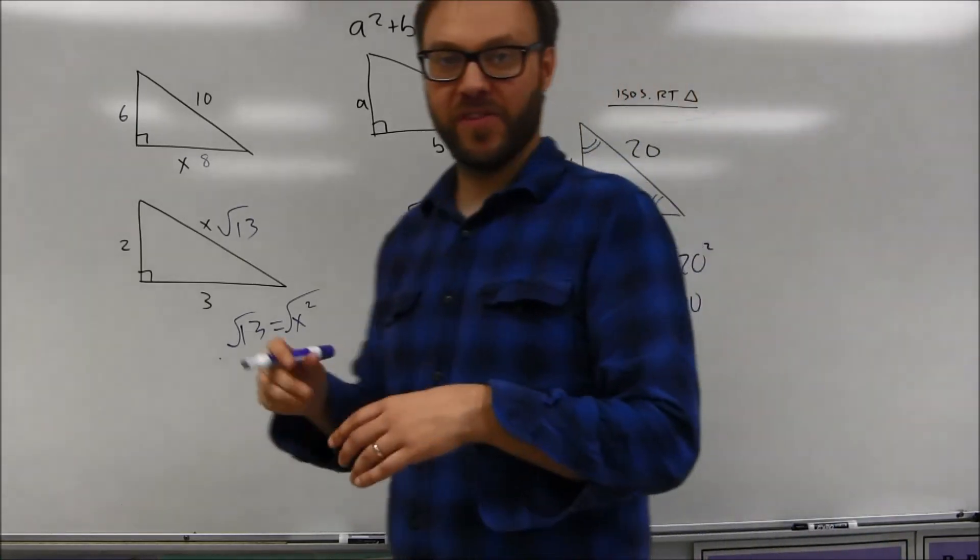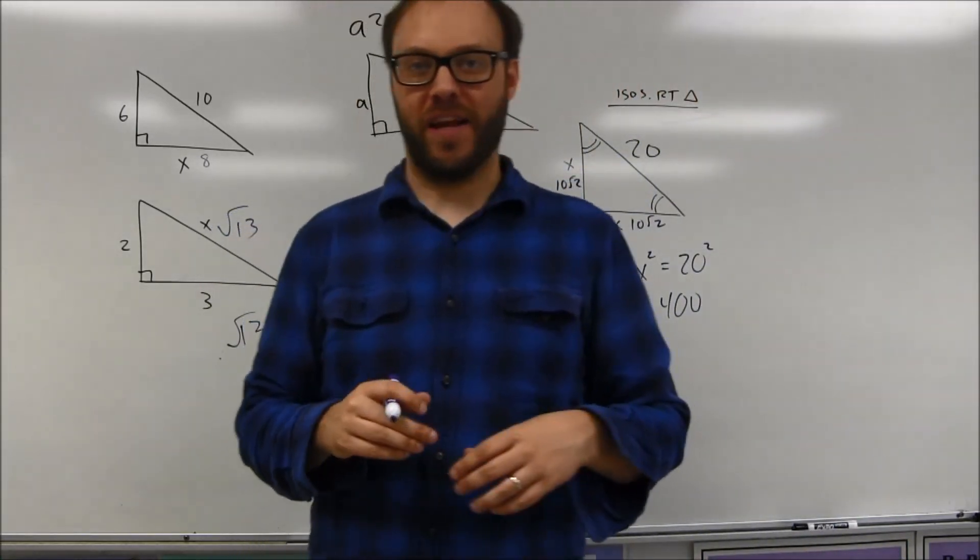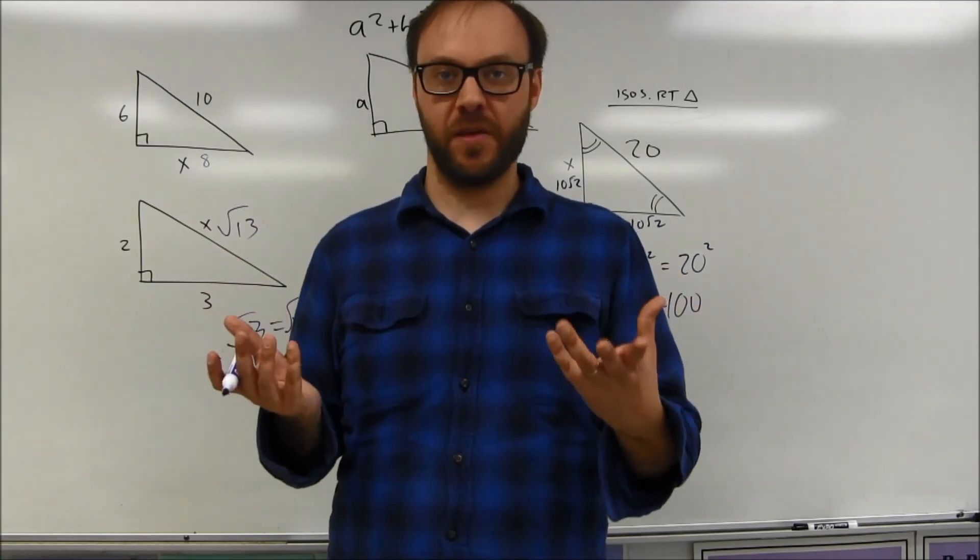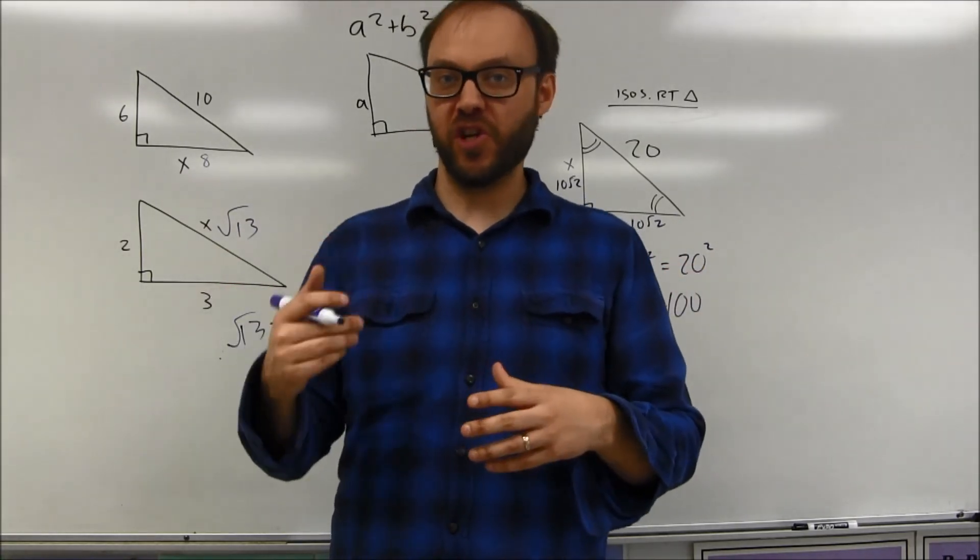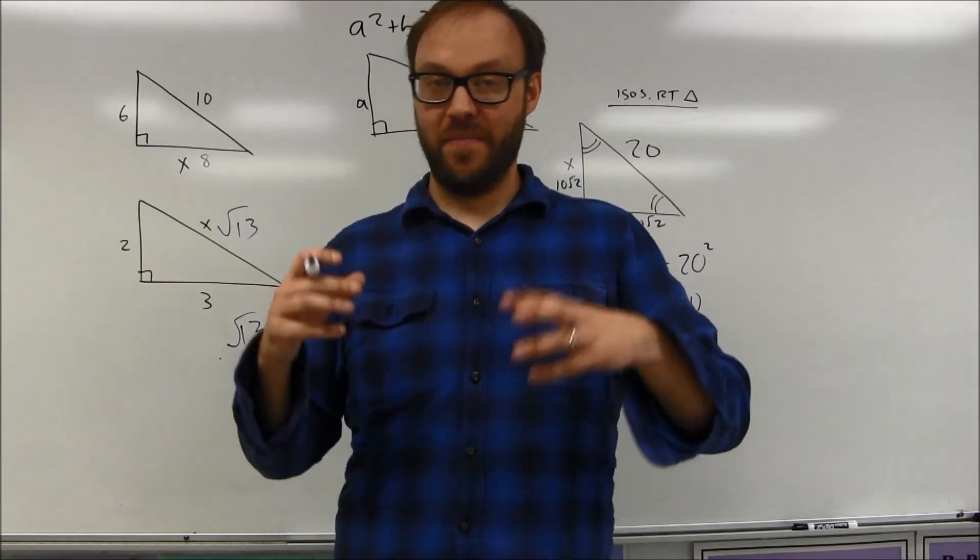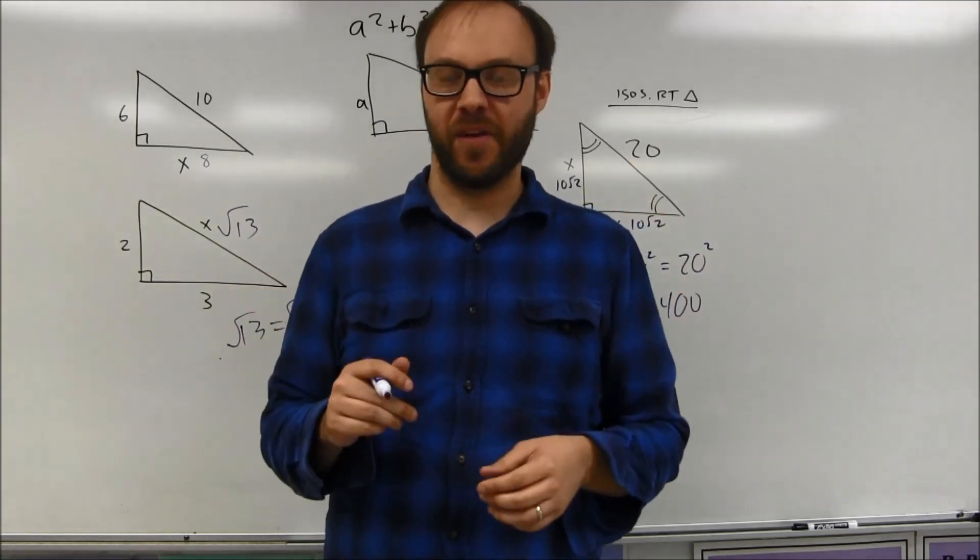If you square both of those and take the square root, you would get 20. So keep that in mind. You actually can put variables into the Pythagorean theorem. As long as you only have one variable type, you should get a solvable equation. It may be messy, and we're going to see that in the upcoming video, but it should be solvable.